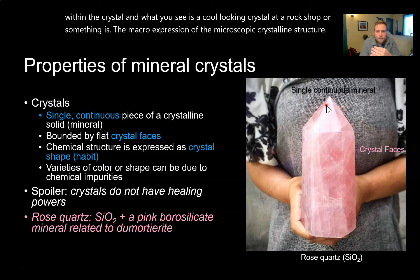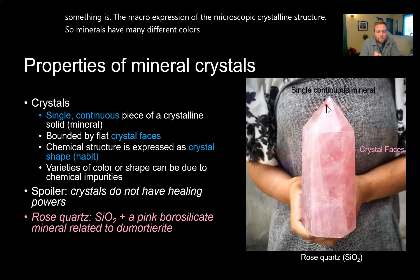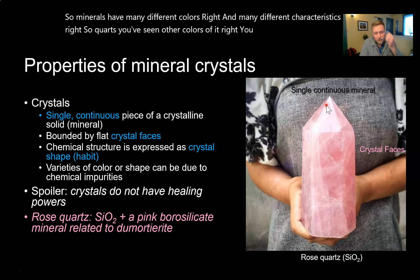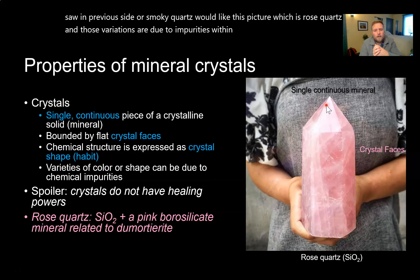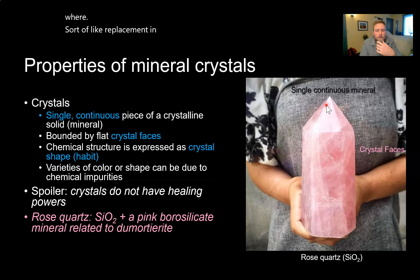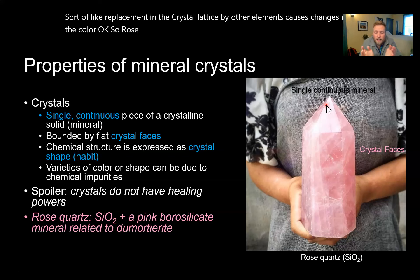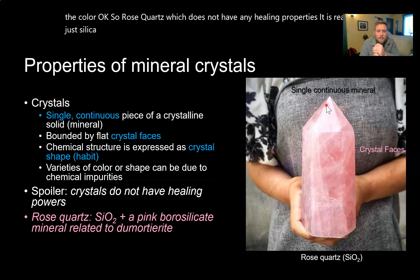Minerals have many different colors and characteristics. Quartz comes in many varieties — clear quartz, smoky quartz, and rose quartz. Those variations are due to impurities within the crystalline structure, where replacement in the crystal lattice by other elements causes changes in color. Rose quartz, which does not have any healing properties, is really just SiO₂ with pink borosilicate minerals placed inside that SiO₂ structure giving it a pink color.